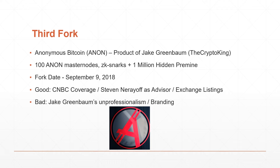There are a couple of bad things. Jake Greenbaum's unprofessionalism on Reddit — he's been threatening people with lawsuits. And also the branding: if you're trying to do a Bitcoin fork, you should at least keep the Bitcoin name in front, not at the back. The ticker is also not really related to Bitcoin. Most Bitcoin forks use Bitcoin as the word in front — Bitcoin Gold, Bitcoin Diamond, Bitcoin Private — and I don't understand why they decided to swap the order here.